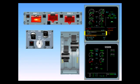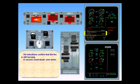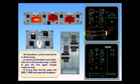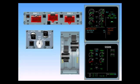If at any time the fire stops, the engine one fire message will disappear. Agent one managed to extinguish the fire. The countdown for agent two has stopped. Notice, the engine one fire switch is no longer illuminated. The fire light on the engine panel is also extinguished. The engine fire procedure on the ECAM has disappeared.